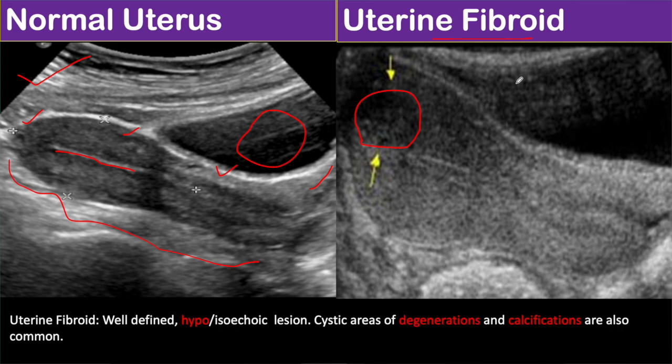Uterine fibroid is the most common benign neoplasm of the uterus and is more common in the reproductive age group. The presentation of uterine fibroid on ultrasound can be widely variable. Uncomplicated uterine fibroid mostly appears as a well-defined hypoechoic lesion.